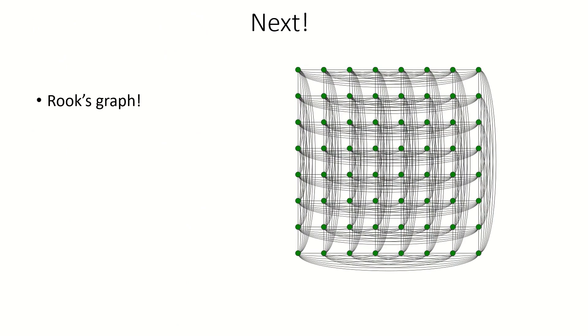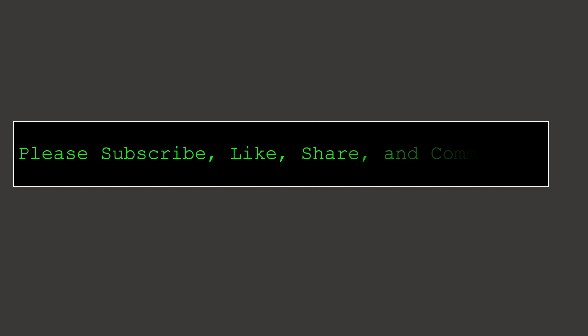In my next video, I'll show you how we can use the Cartesian product to define a graph that captures the legal moves of a rook on a chessboard. In future videos in this series, we'll cover other graph operations like the strong product and the tensor product. That's all for this video — thanks for watching. Please subscribe, like, share, and let me know if you have any questions in the comments. Have a great day.